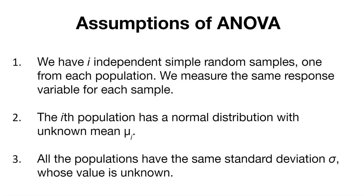We measure the same response variable for each sample. The second assumption is that the i-th population has a normal distribution with some unknown mean, which we denote mu sub i. The third assumption is that all the populations have the same standard deviation, sigma, but we don't necessarily know what that is.